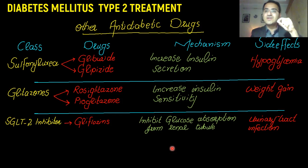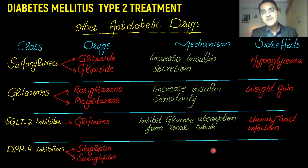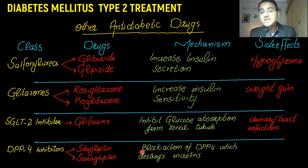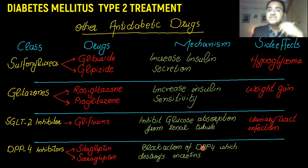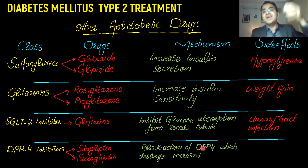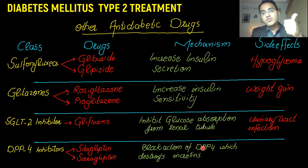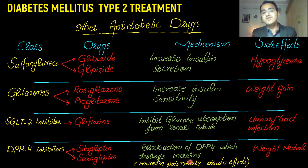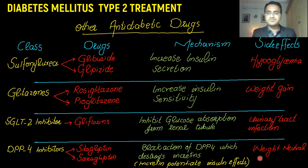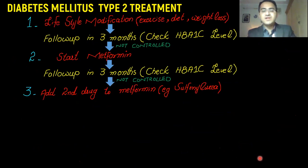Another class of drugs is DPP4 inhibitors — dipeptidyl peptidase-4 inhibitors — which include sitagliptin and saxagliptin. Their mechanism of action is to inhibit the DPP4 enzyme, which normally destroys the hormone incretin. Incretin potentiates the effect of insulin, so by blocking the enzyme that degrades incretin you increase incretin levels, which in turn potentiates insulin effects and controls sugar levels. Importantly, DPP4 inhibitors are weight neutral — they do not cause weight gain.